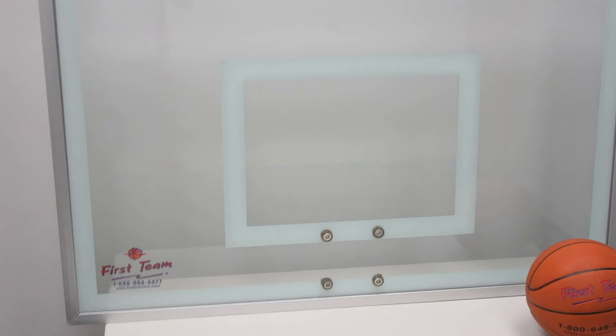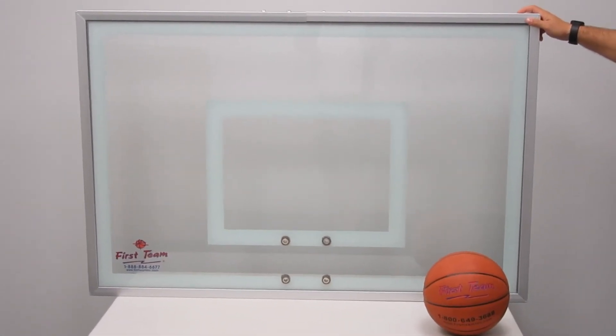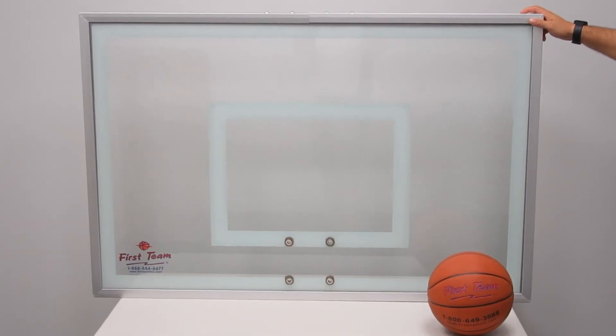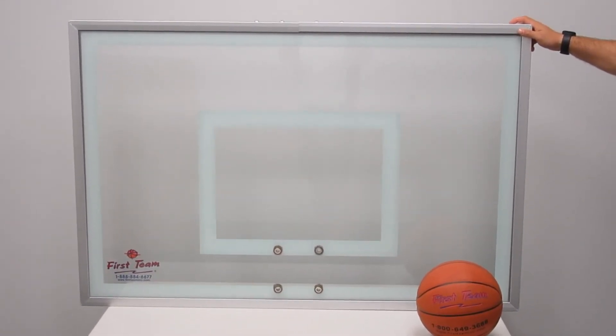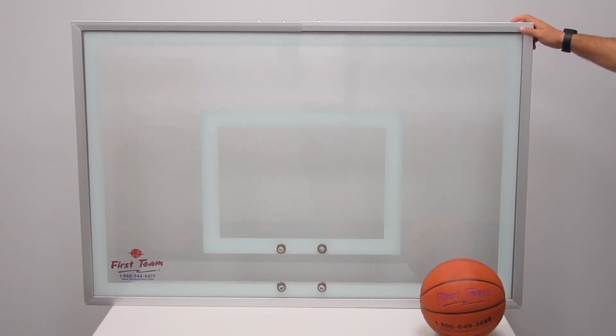We have a basketball sitting there just to give you an idea of the general size of the backboard. Again this is the FT216 tempered glass backboard by First Team Sports.